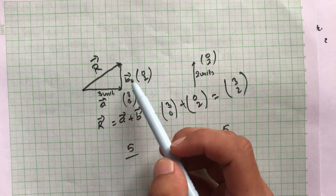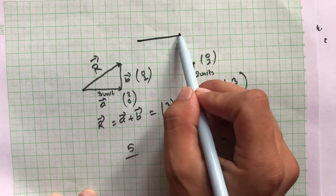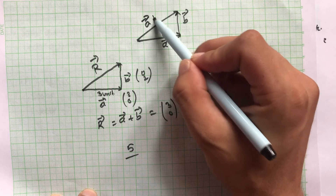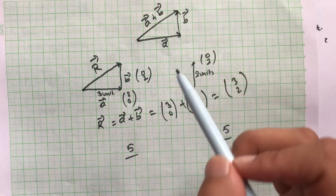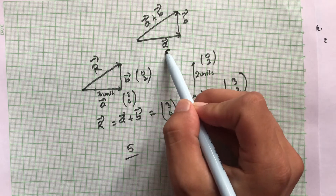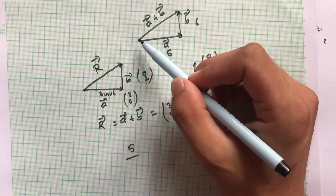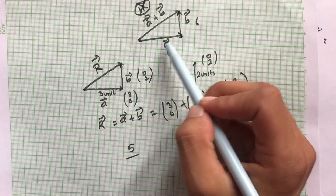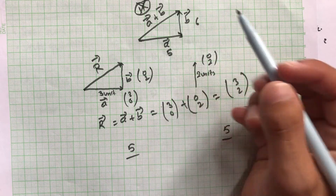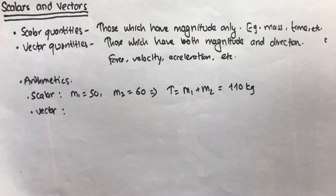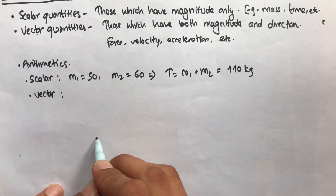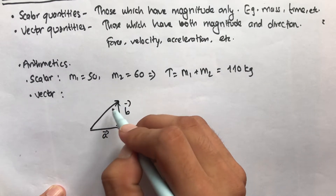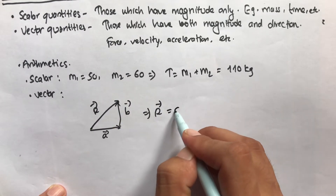This new vector is the sum of the first vector and the second vector — this is the triangle law of vector addition. If I place vector A here and vector B here, the new vector is A plus B. But this does not mean that if the length of A is five and the length of B is six, the length of the resultant is eleven. The sum of two vectors gives a new resultant vector, not simply the sum of their magnitudes.